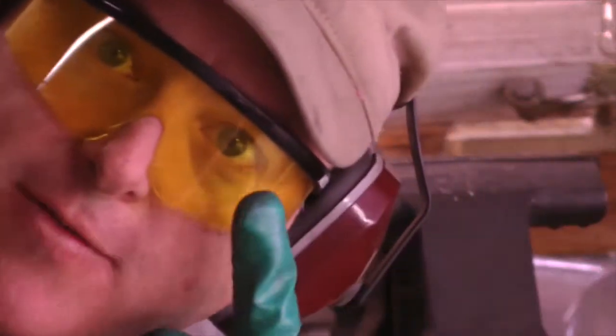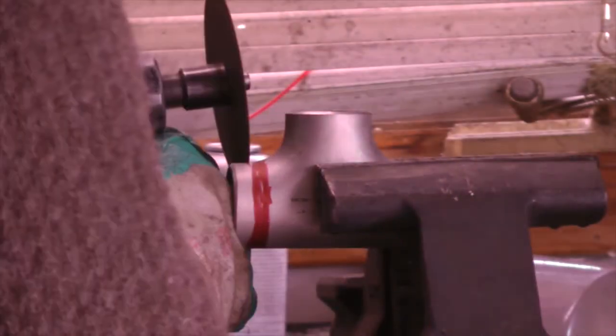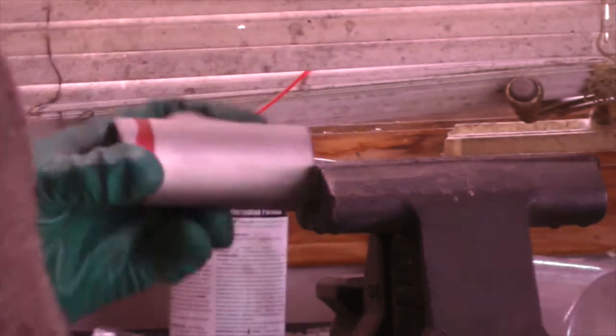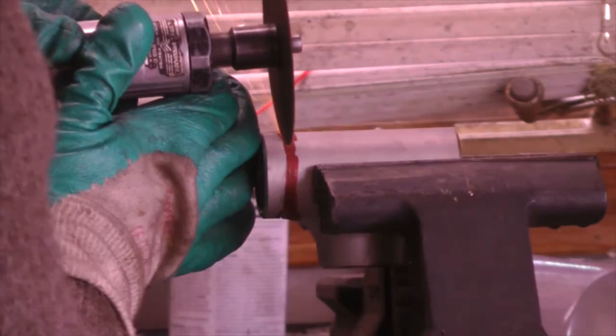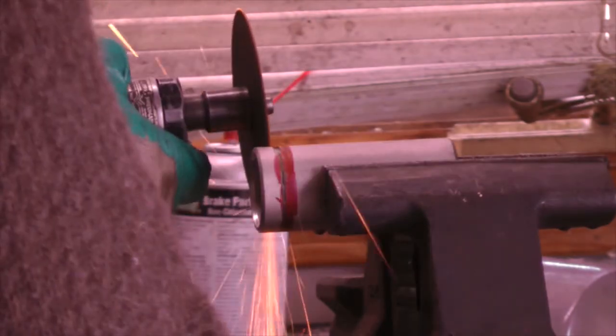Again, safety glasses, ear protection. Using a high-speed cutoff wheel, lightly mark around the tubing. And then after you've established a light mark, you can cut more aggressively all the way through the bend.